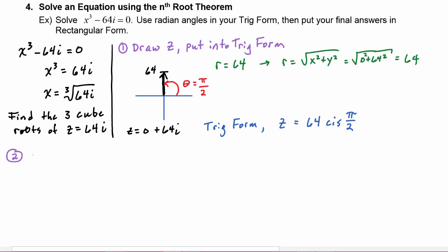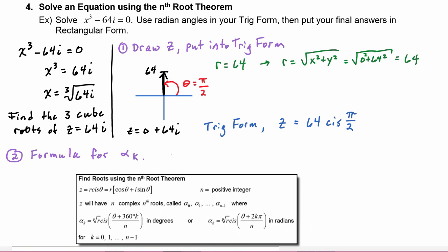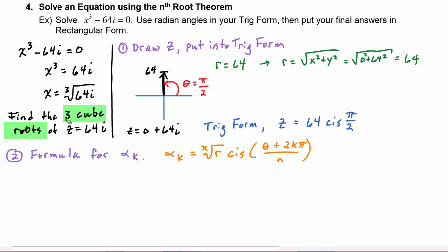Step 2 is to find the formula for the α_k's. We know the rule says that α_k has to be the nth root of r times cis(θ + 2kπ)/n, because we are in radians. In our case we are finding the three cube roots, so that means n = 3. From the trig form of z we see that r = 64 and θ = π/2.